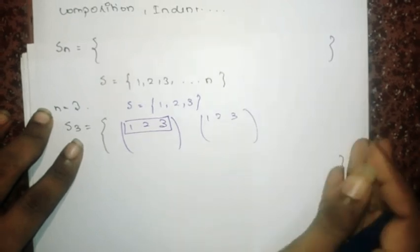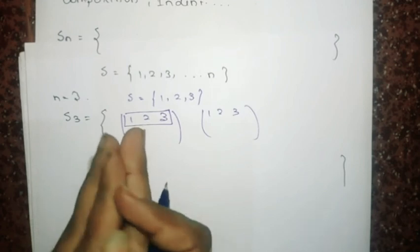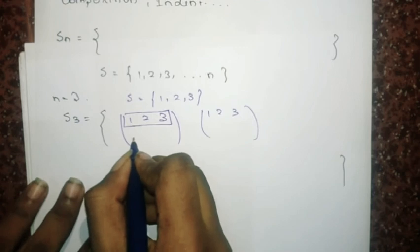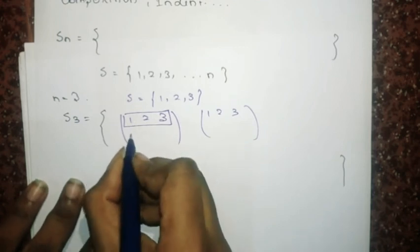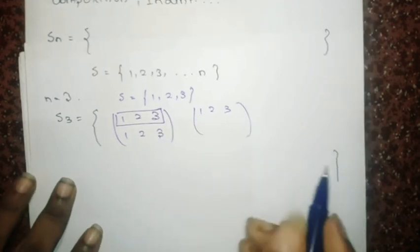I'll write 1, 2, 3 repeatedly, but I'm going to change the order of the images. I'll start with the identity permutation: 1 is mapped to 1, 2 is mapped to 2, 3 is mapped to 3.